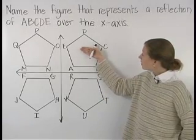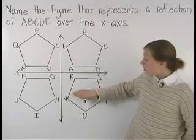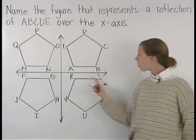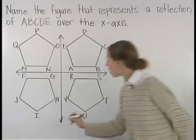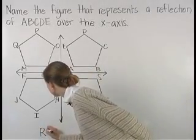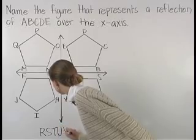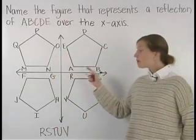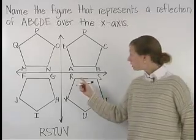Notice that if we flip ABCDE over the x-axis, it's in the position of R-S-T-U-V. So R-S-T-U-V represents a reflection of ABCDE over the x-axis.